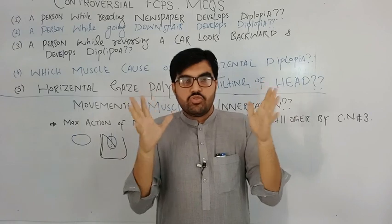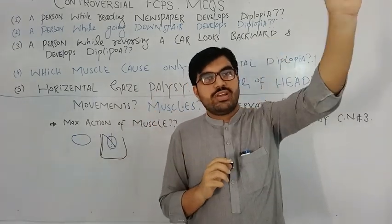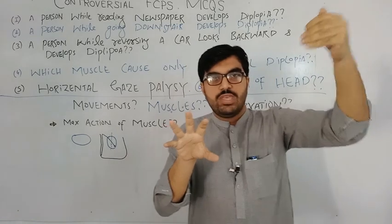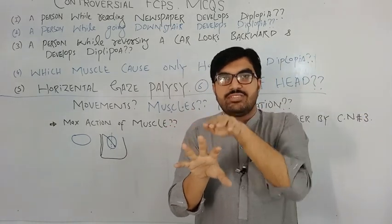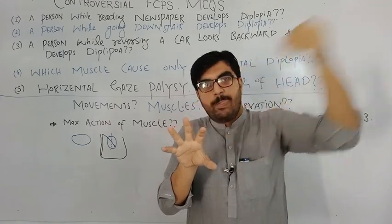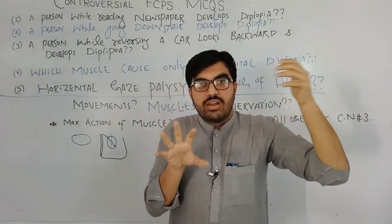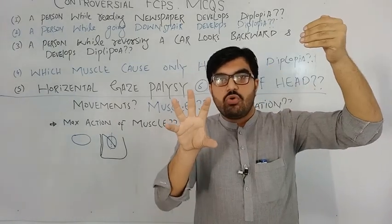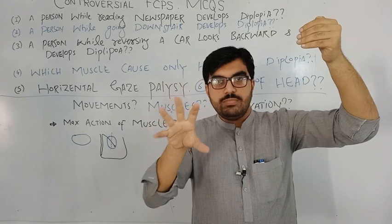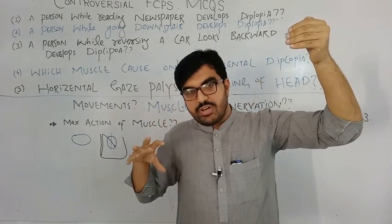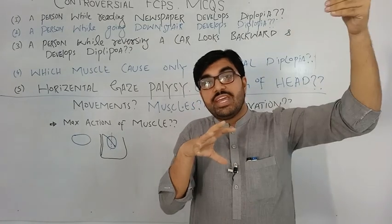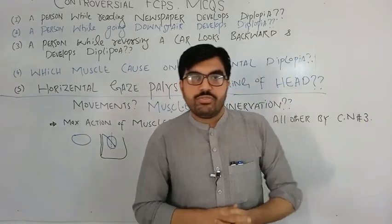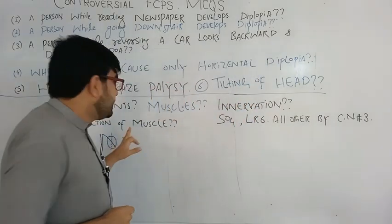The superior oblique moves from the orbit toward the trochlea and then comes back to attach to the superior posterior portion of the eyeball. The axis of the eyeball and the axis of the superior oblique are not parallel in primary gaze. For the superior oblique to work maximally, its axis must be parallel to the eyeball axis, and that is only possible when the eye looks medially.